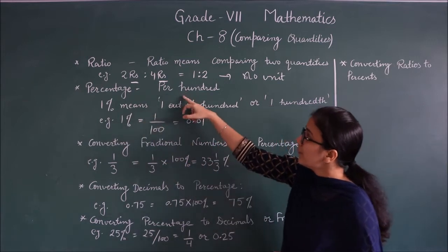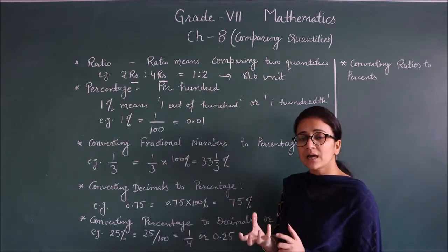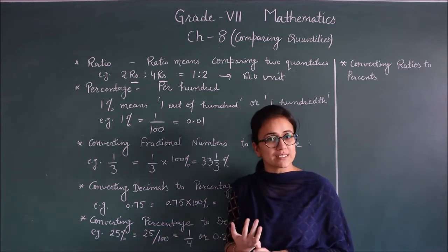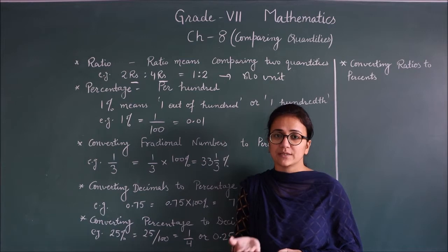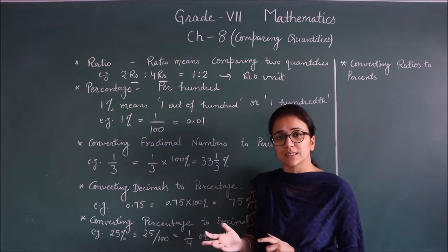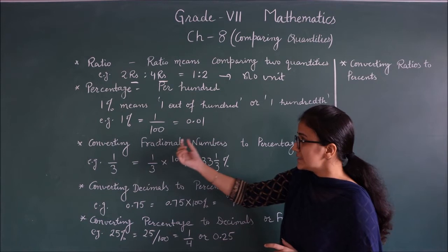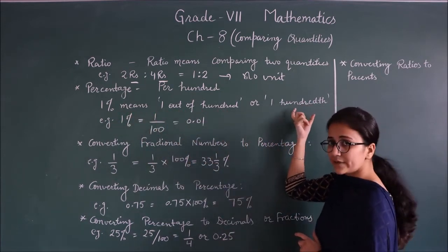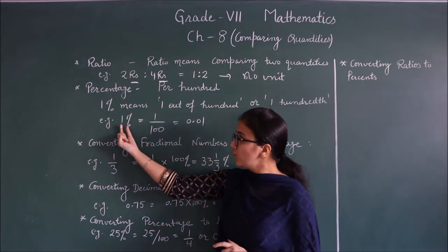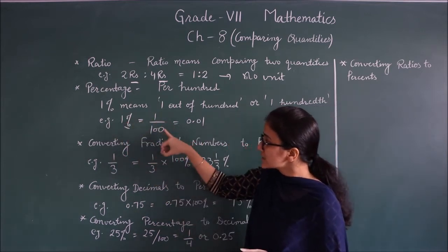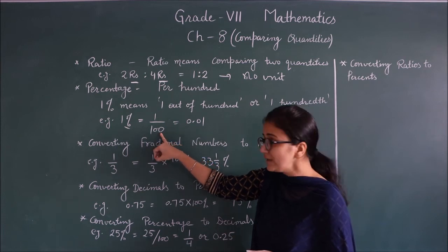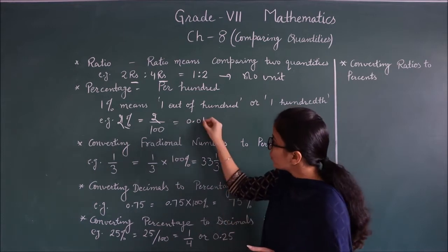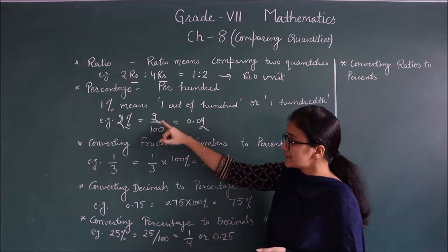Percentage means 'per hundred' — how much out of a hundred. Like your marks are shown as percentage: 70%, 45% — all considered out of hundred. One percent means one out of hundred. For example, 2% means 2 upon 100, which equals 0.02 in decimal form.